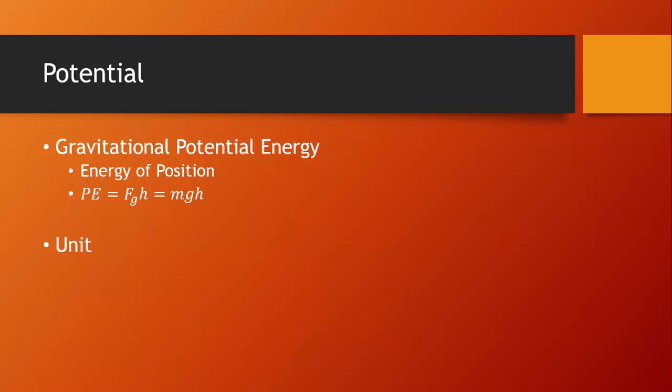Once again, let's take a look at the units. If we look at the equation mgh, we'll see that we would substitute in kilograms, meters per second squared, and meters. When we multiply all three, we end up with kilogram meters squared per second squared, which we have previously learned is a joule.